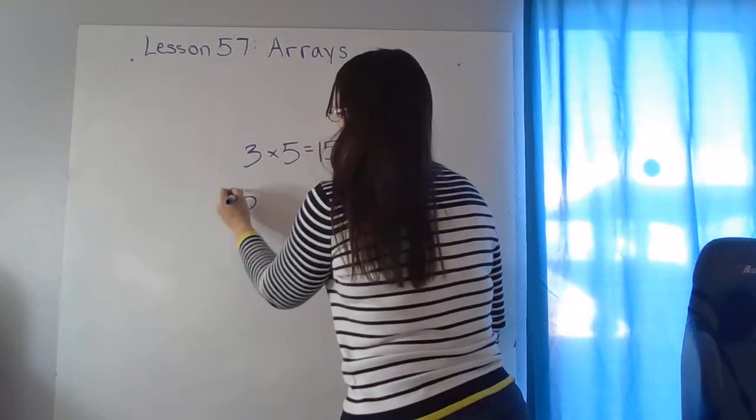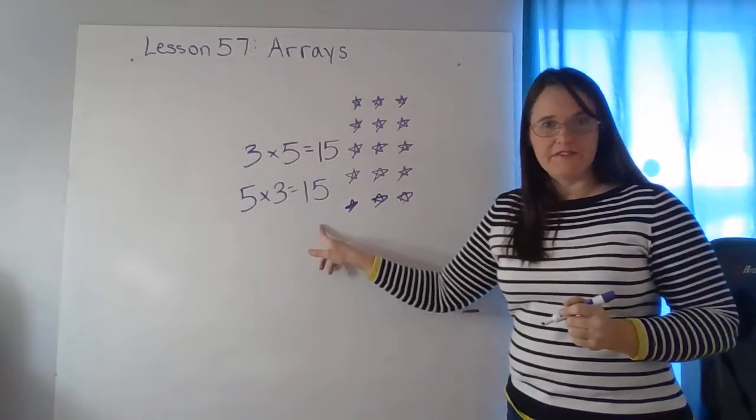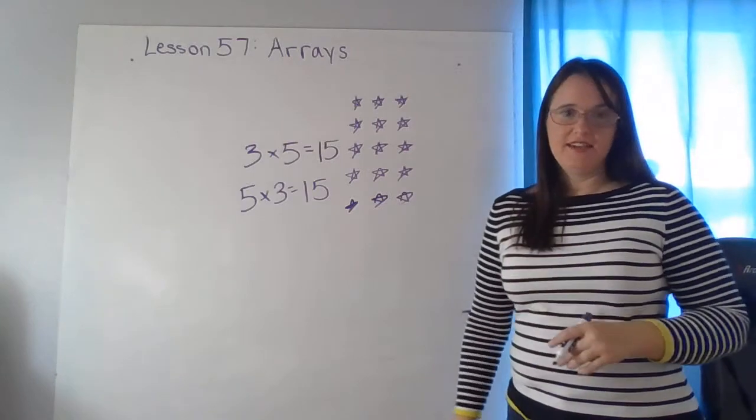Three times five is fifteen. If you flipped it around and said five times three is fifteen, same thing. You got it.